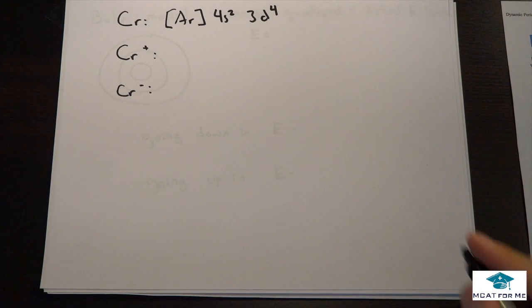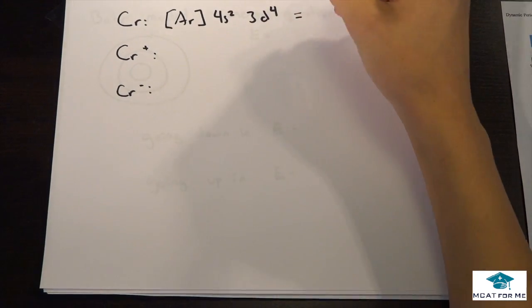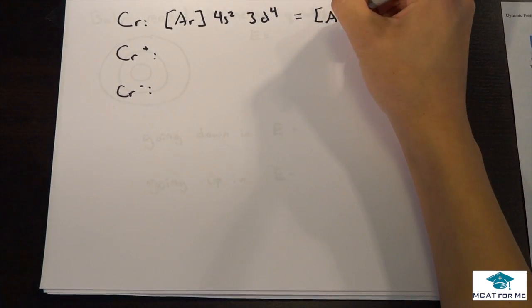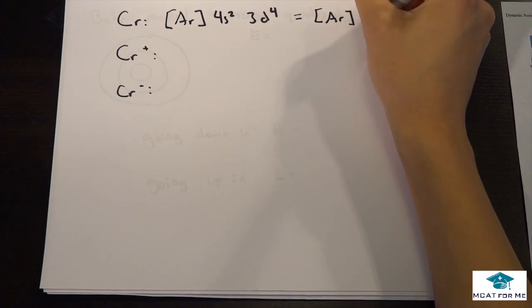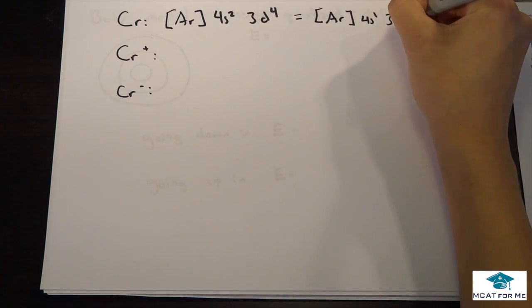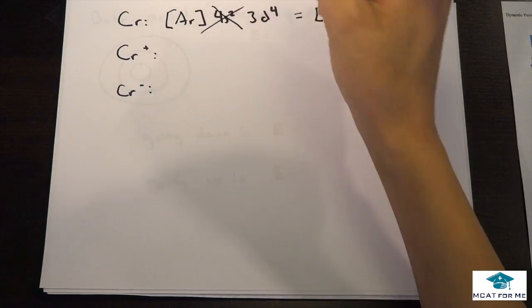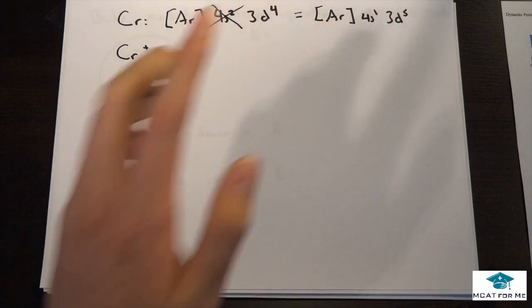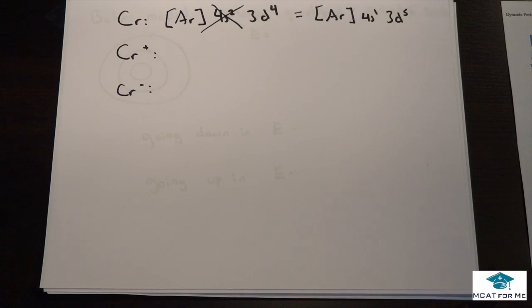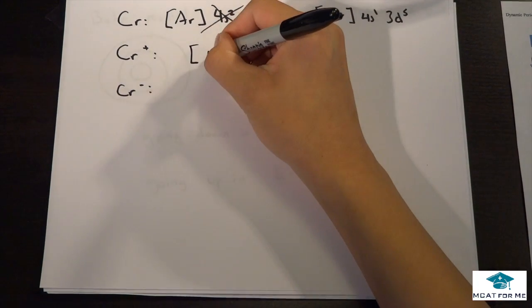I kind of gave it away with the last one. That was our expected, but that's actually wrong. This is wrong. That was our expected, but this is the actual, because it was in the fourth family of the d block.